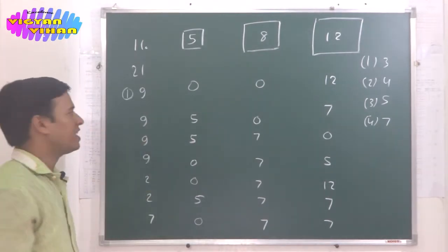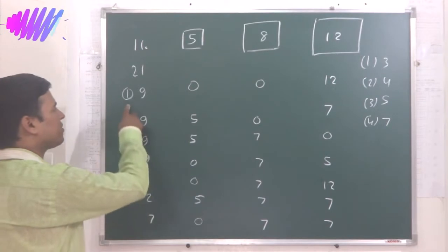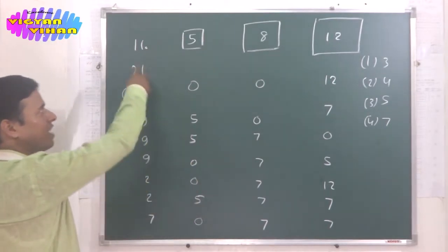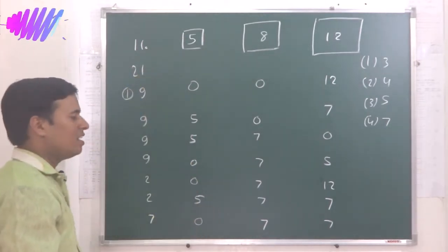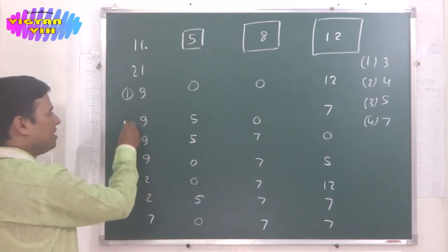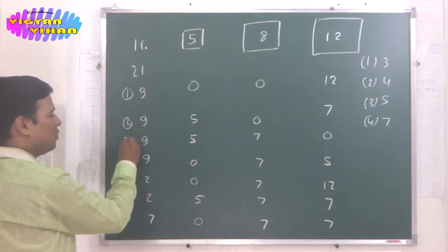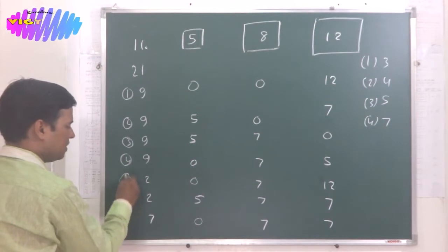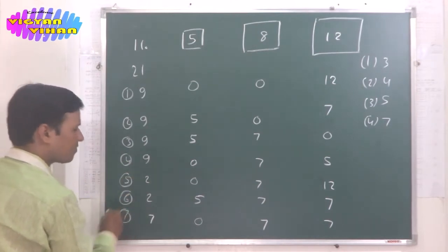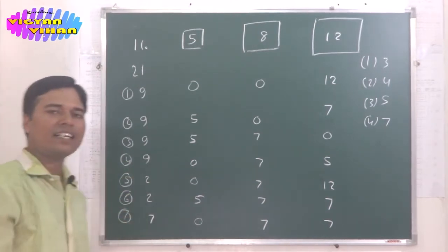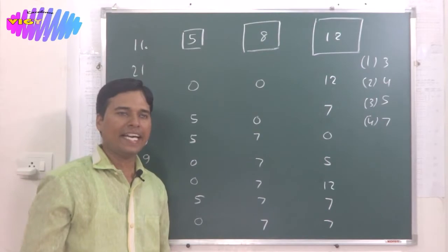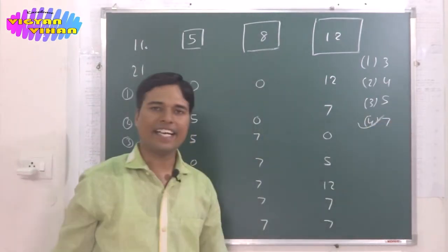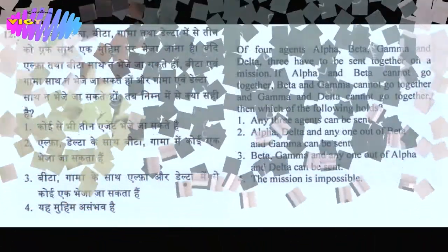Counting the steps: 1, 2, 3, 4, 5, 6, 7. The minimum number of steps required to divide 21 liters into 3 equal parts is 7. So the correct answer of this problem is option 4, that is 7.